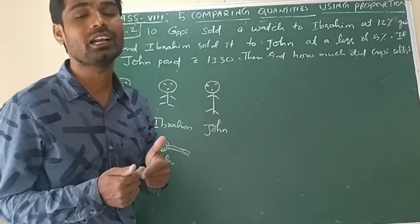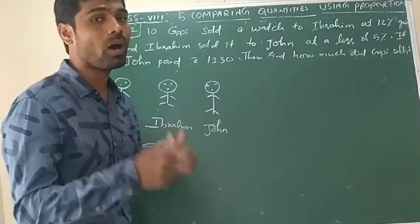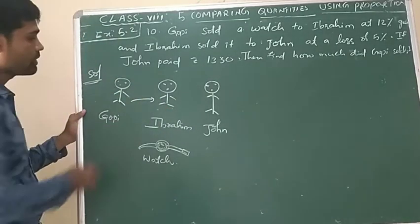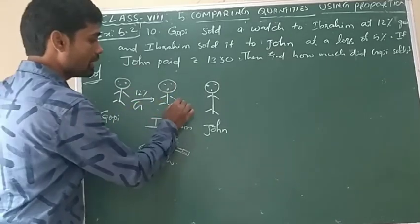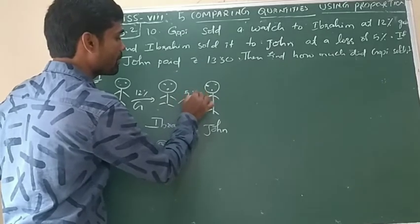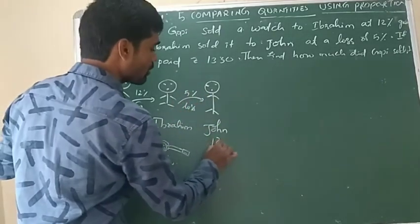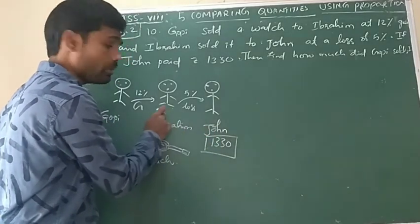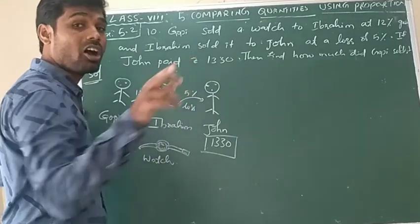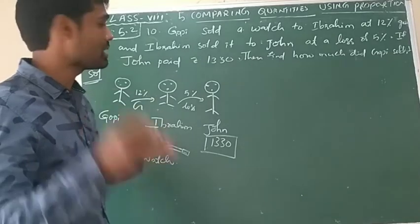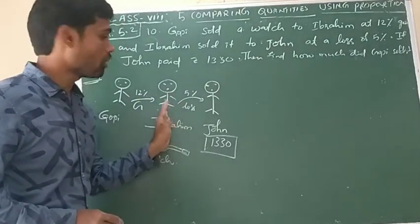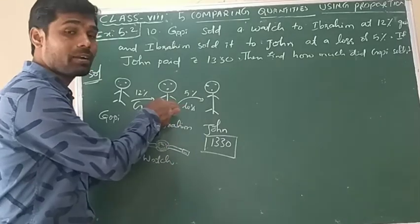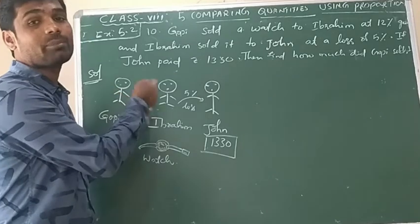So what we have to find is the amount paid by Ibrahim. If we know that, we can find the amount Gopi sold it for. Gopi sold to Ibrahim at 12% profit, and Ibrahim sold to John at 5% loss. John paid 1330 rupees. So if we find the 100% of Ibrahim's transaction, that is the amount Ibrahim paid to Gopi — that is Gopi's selling price.